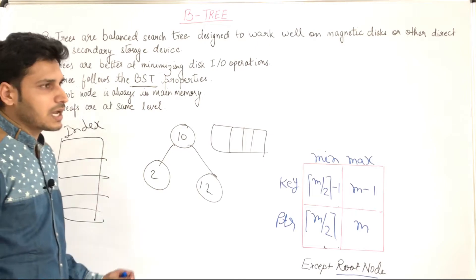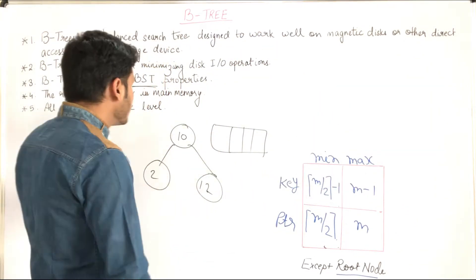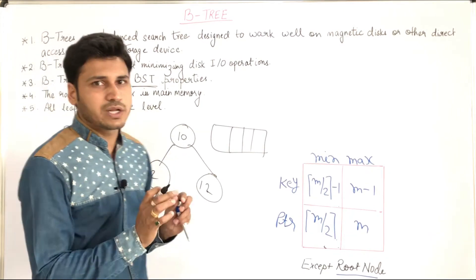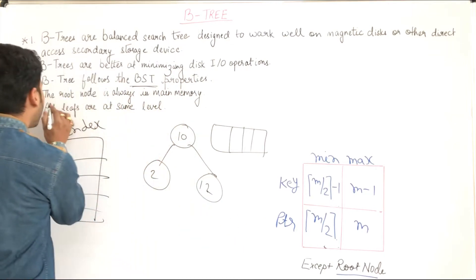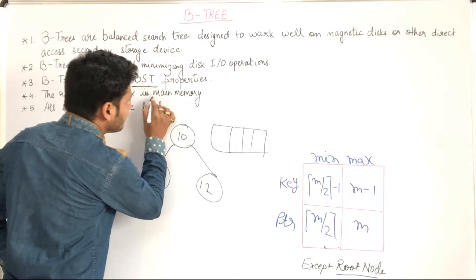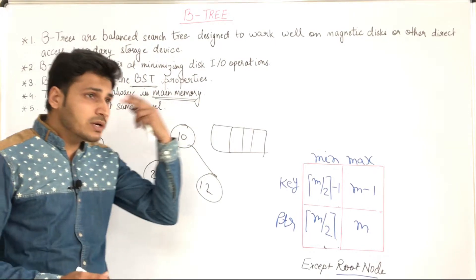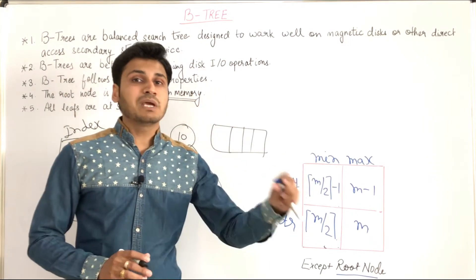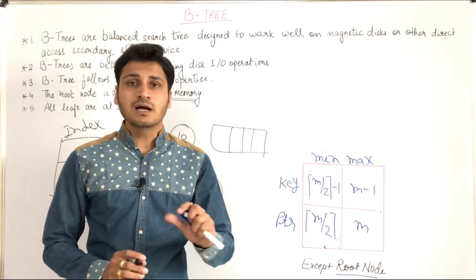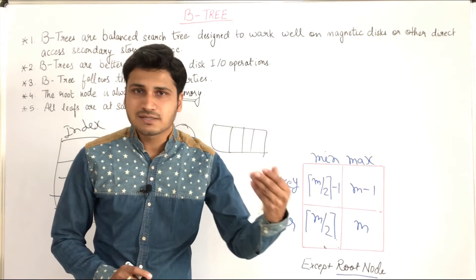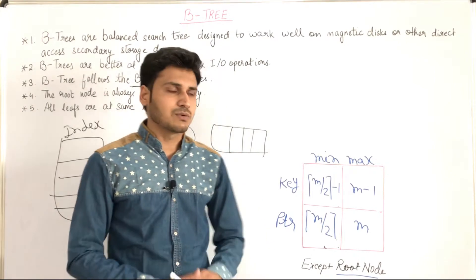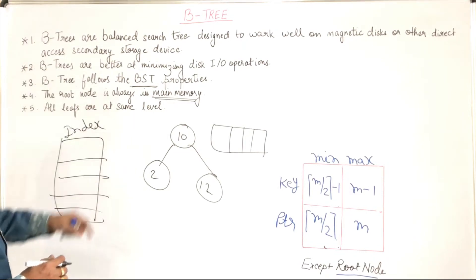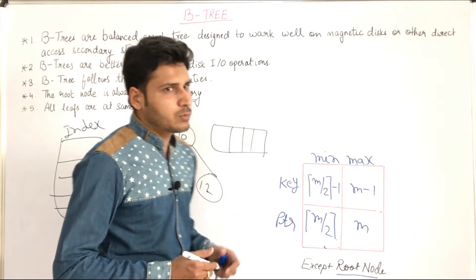We store the keys in the root node, which is stored in our main memory. An important point is that the root node is always in main memory. After the root node, the child nodes are stored in secondary memory. Why? Because in main memory we can't keep data in large amounts — only the frequently accessed data, which is the root node, is kept in main memory.